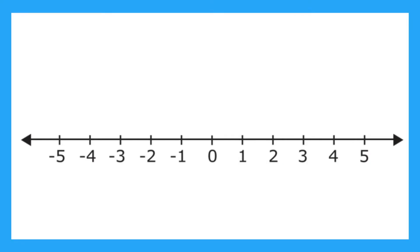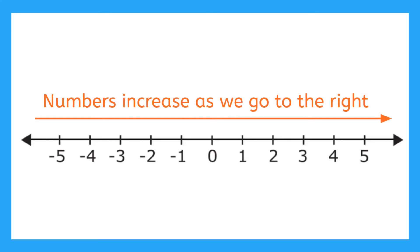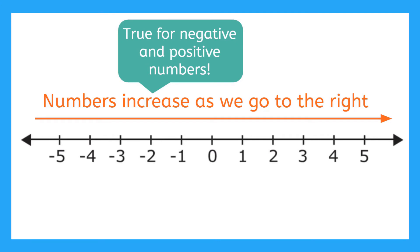Another way to think about this is to say numbers increase as we go to the right on the number line. This is true for negative and positive numbers.